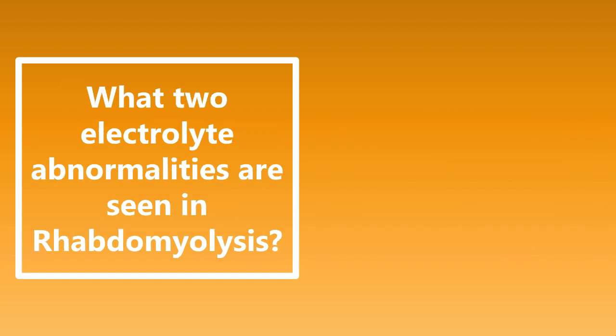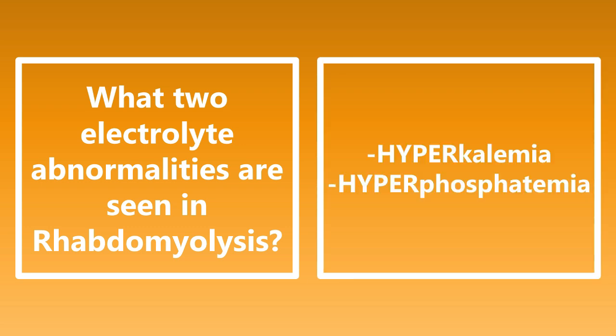What two electrolyte abnormalities are seen in rhabdomyolysis? These are going to be hyperkalemia and hyperphosphatemia. When you have rhabdo — a patient who's been out in the hot sun, not drinking water, or just ran a marathon — they'll have muscle breakdown and muscle necrosis, developing hyperkalemia as well as hyperphosphatemia. The hyperkalemia is the thing we worry about the most in emergency medicine because it can cause significant cardiac issues.